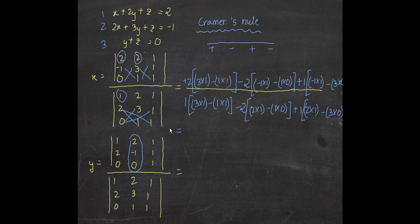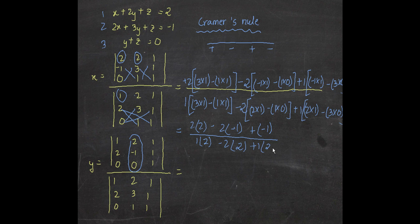Let's calculate using a calculator. For the numerator: two into three minus one is two, minus two is minus one, minus zero gives minus one, plus one gives minus one. For the denominator: four minus four equals zero. So we get five over zero, which is infinity. This was a random problem I made up, so the answer comes out to infinity — in a real exam problem, they won't set it up that way.